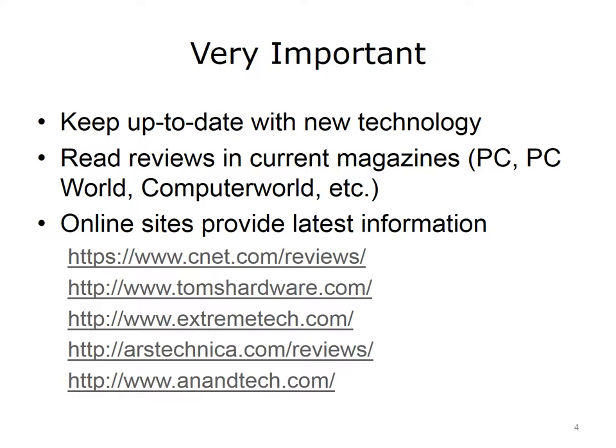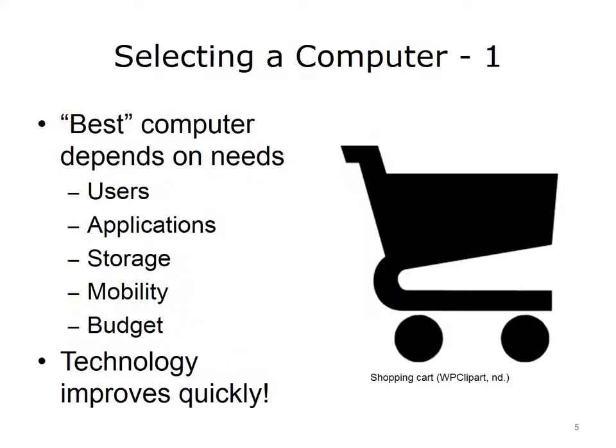New products are always coming out, and prices change quickly and often. This slide lists some online sites that provide the latest information. You can look at any or all of them to find accurate information. Choosing which computer system to purchase is difficult. There is no one-size-fits-all solution. Instead, there are many choices to make, each designed to support different needs. And to complicate matters further, there are new computers continuously being developed. So, the best computer for you today may not be the best one for you in six months or a year.